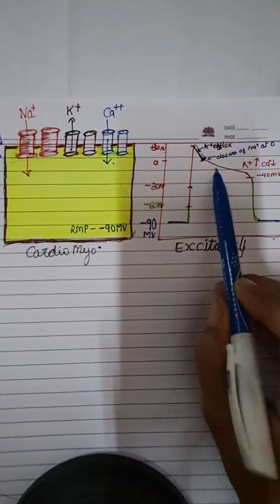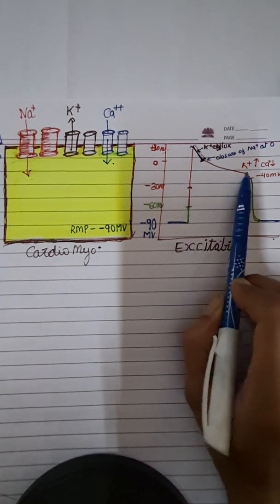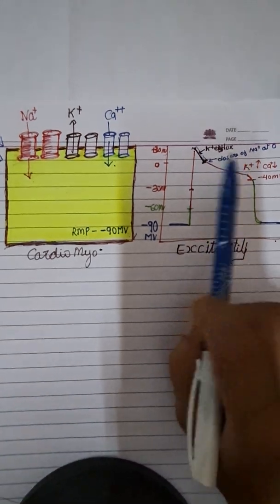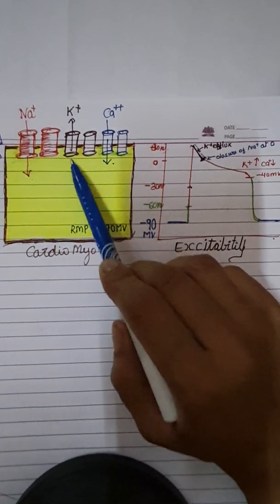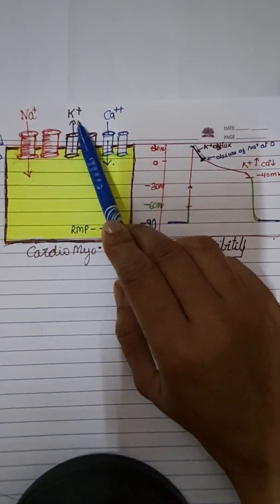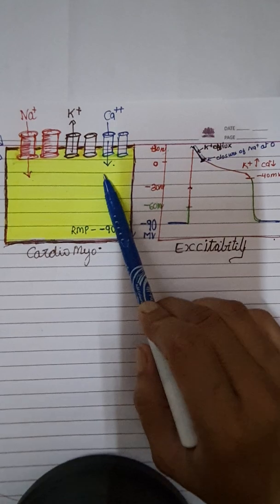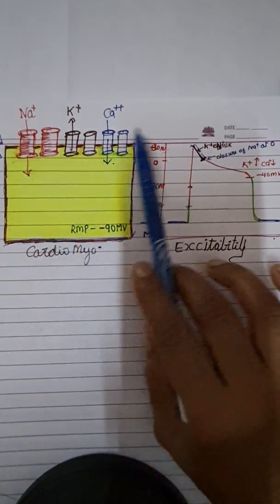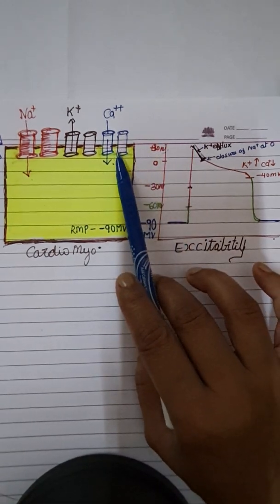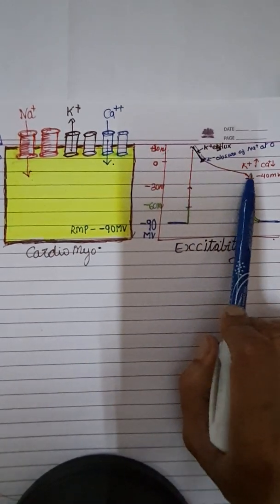Here we get a plateau phase because sodium channels are closed. The efflux of potassium and the influx of calcium ion balance the potential, so there is no net change in the potential and we get this plateau phase.